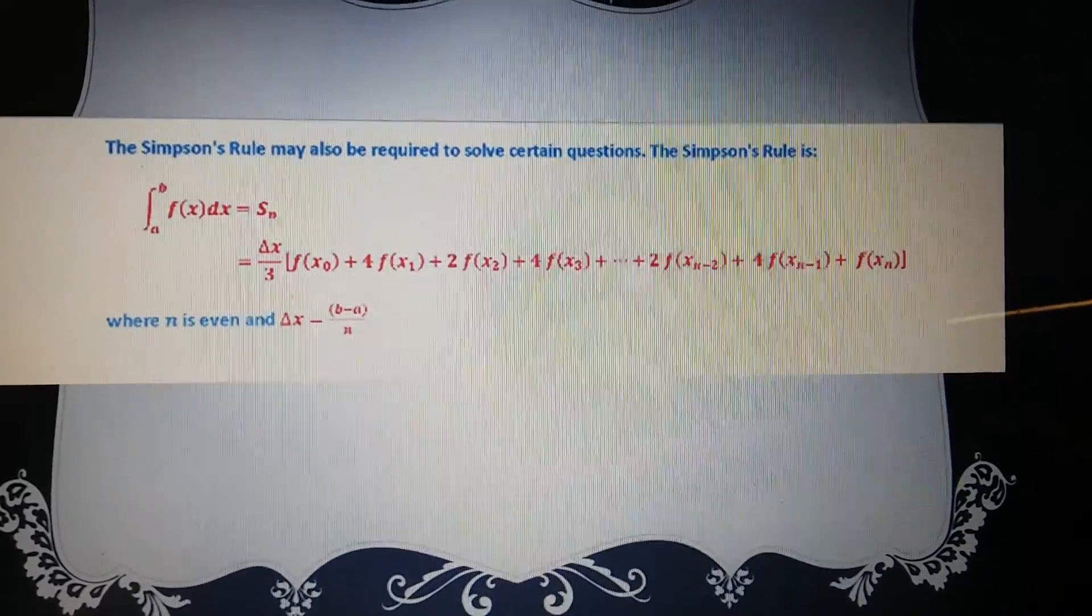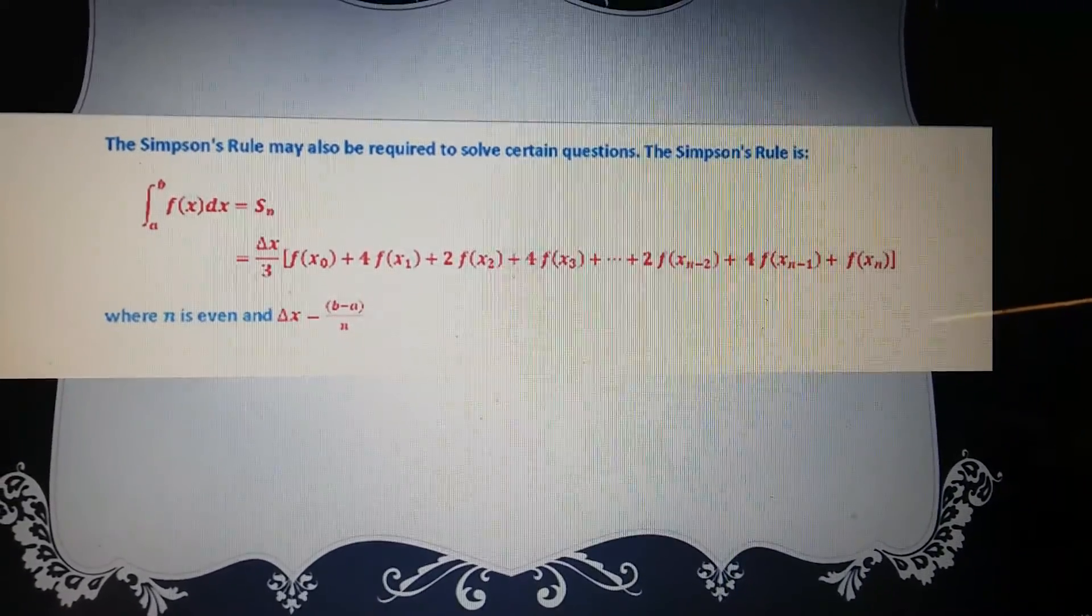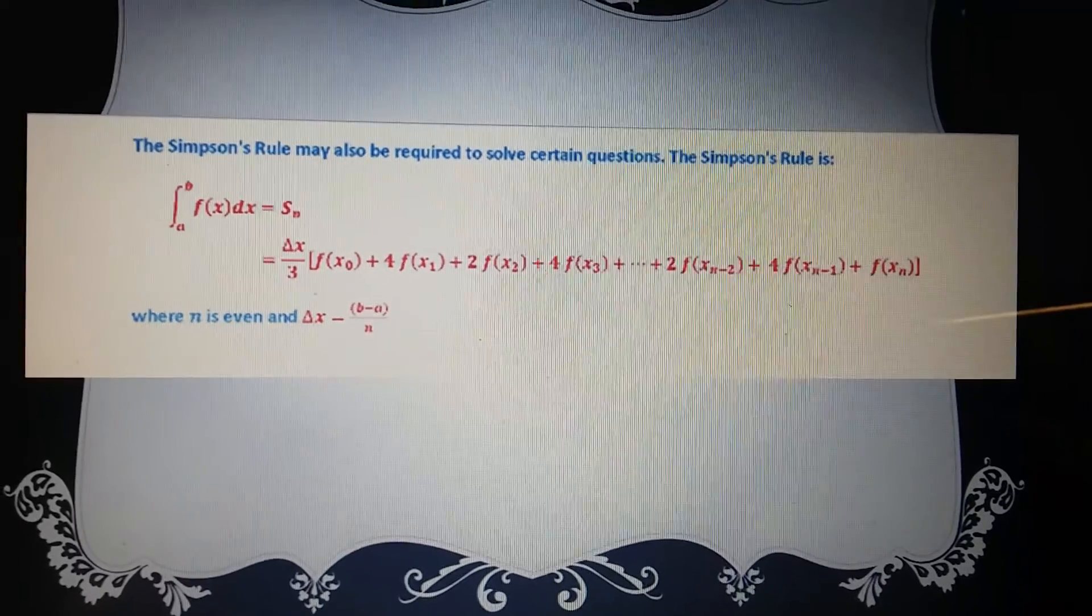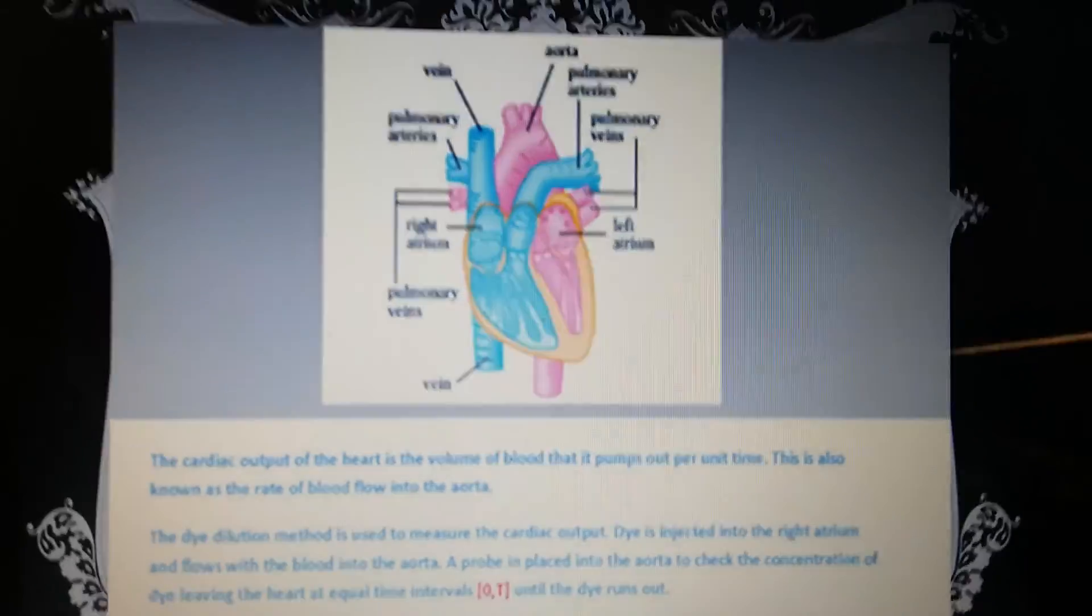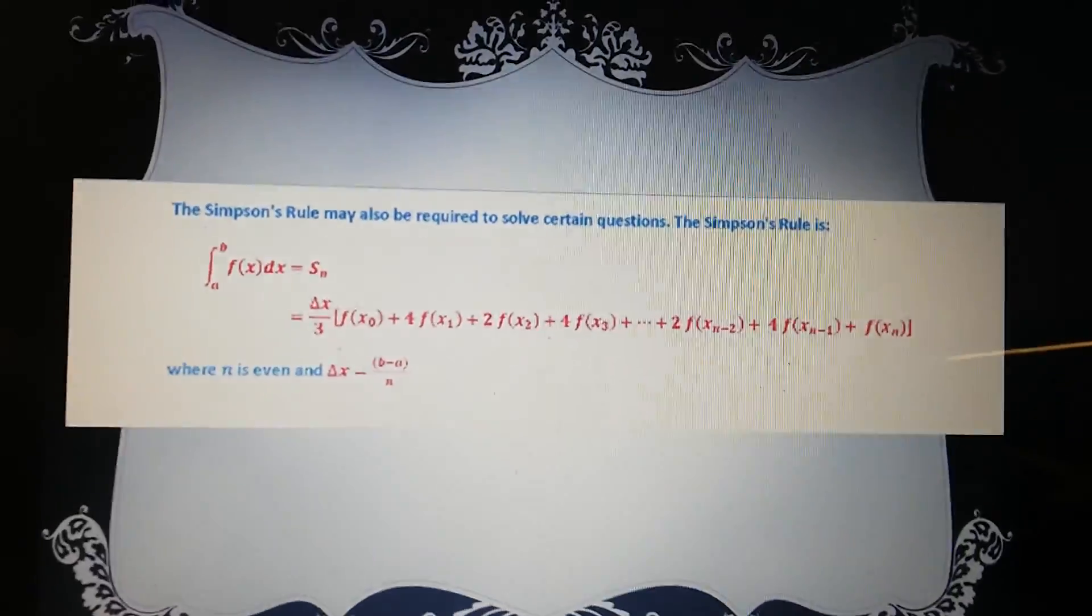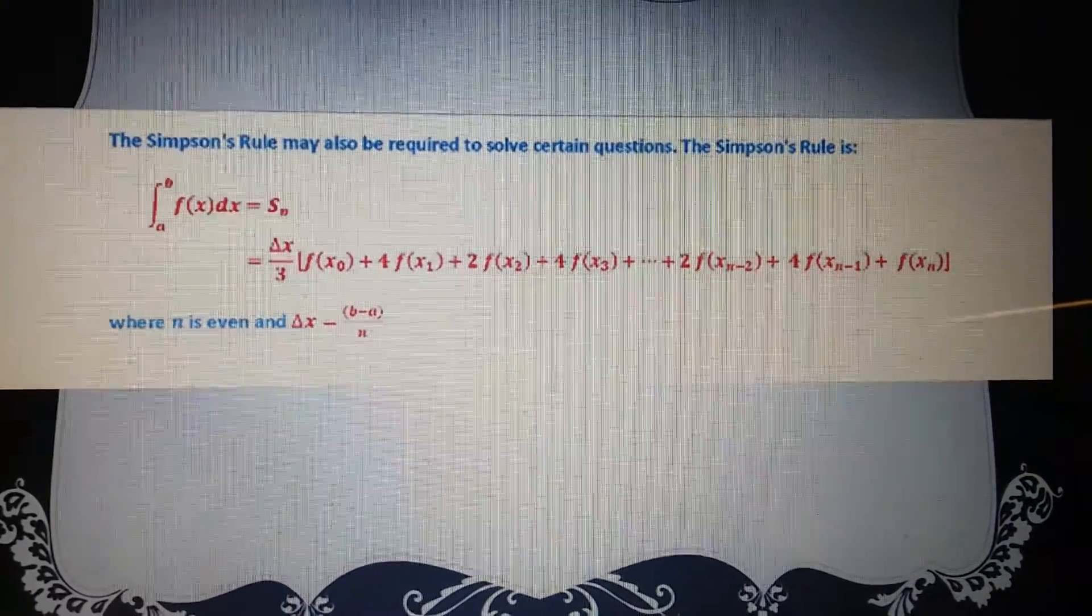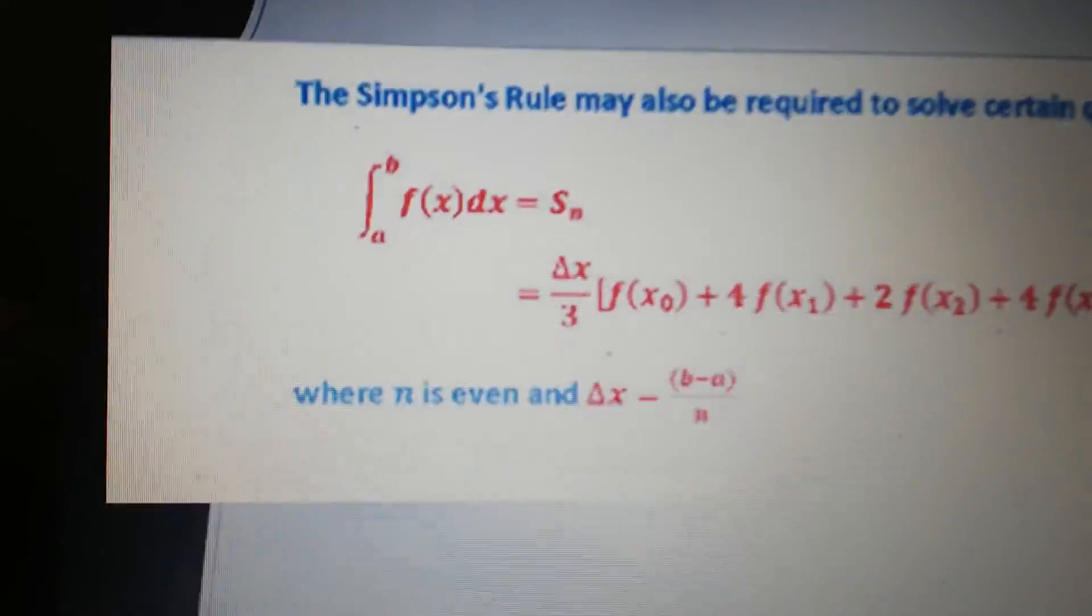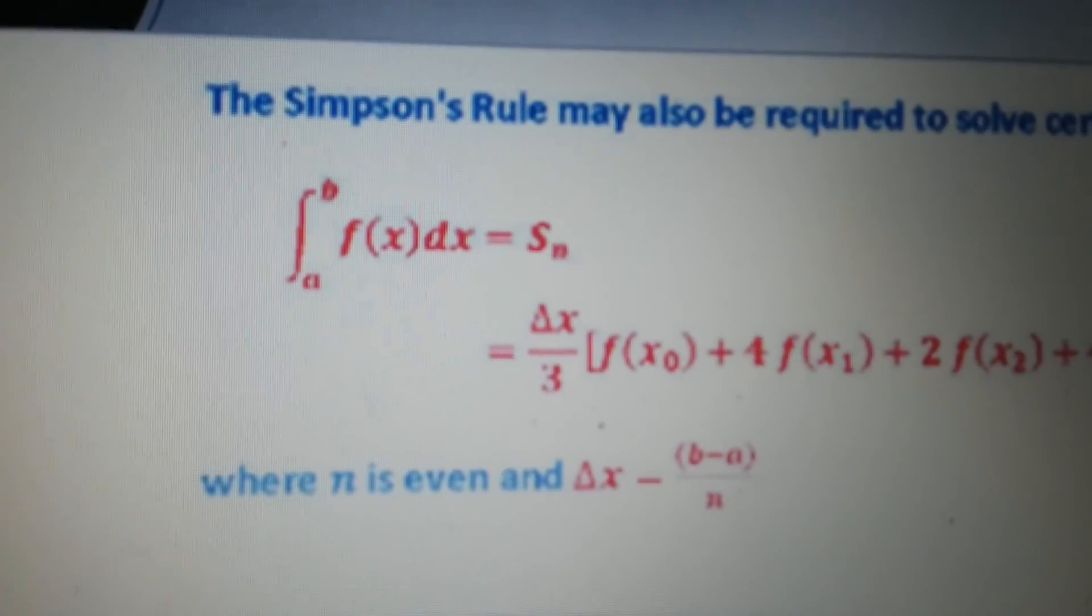Now for this, we use Simpson's rule. It may also require to solve certain questions like the cardiac output. As you can see, this is another equation that we use a lot in calculus.